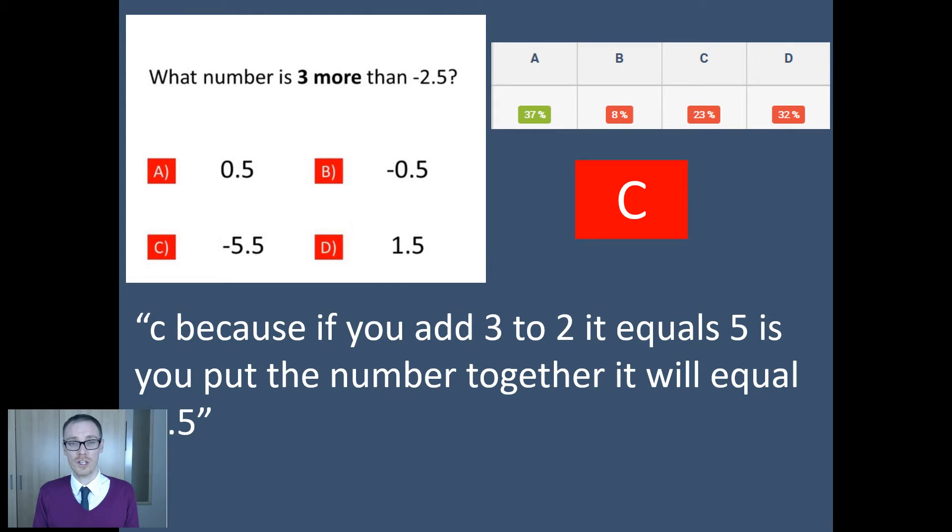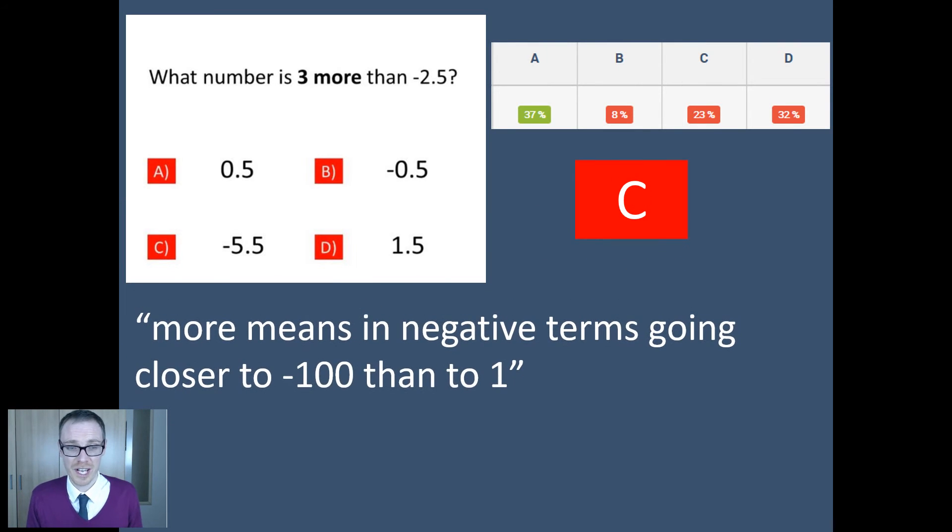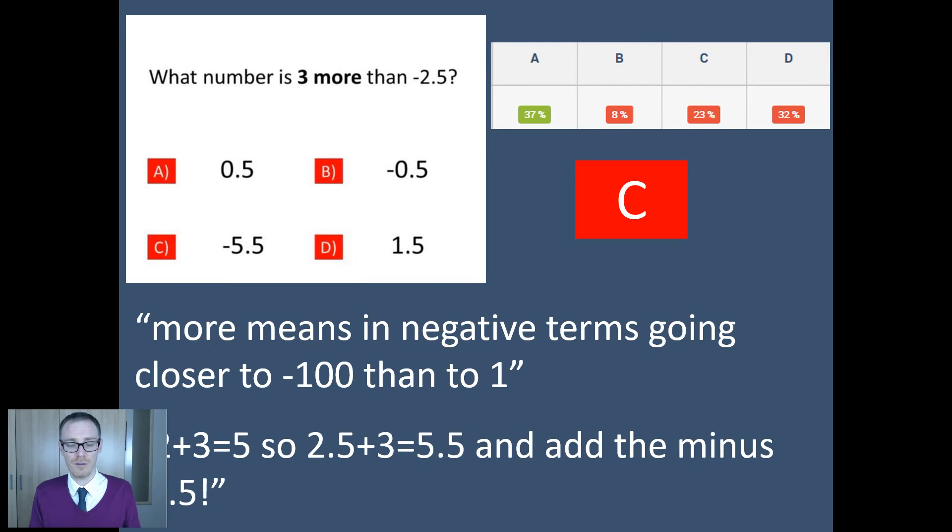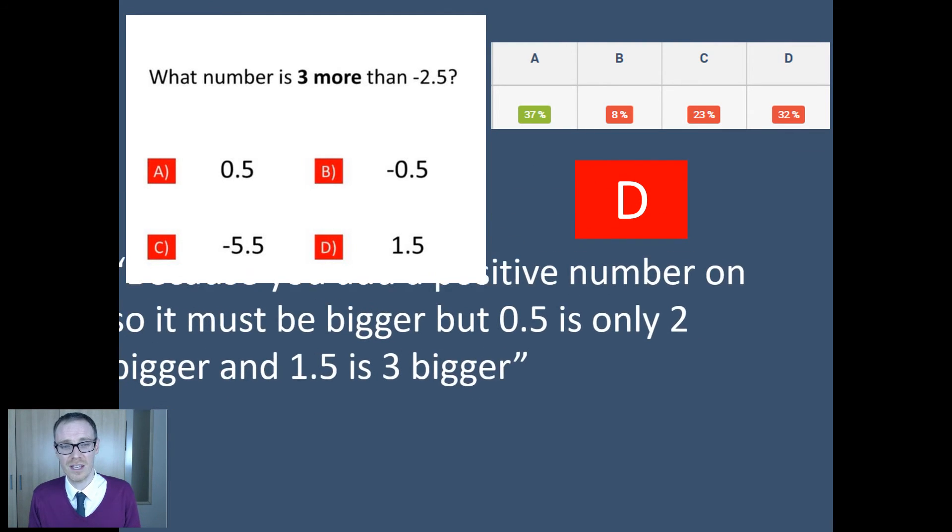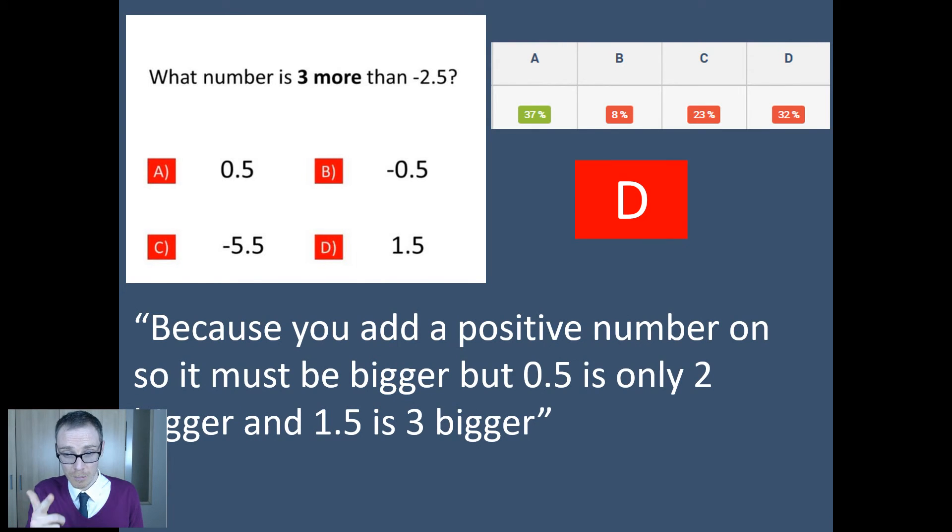So why are students going for C? Why do they see minus 5.5? If you have three to two it equals five, and you put the number together, it has been minus 5.5. So three more, they're just treating it as if positive answers. They're treating it as if it was three more than 2.5, then just chucking the minus sign on there. As a student explains, more means in negative terms going closer to minus 100 than to one. Well it does, but have they got the understanding of three more means more positive? A very specific misconception: two plus three is five, so 2.5 plus three is 5.5, put the minus sign on. Same misconception. What about D? Why is this the most popular? 1.5 because you had a positive number on, so it must be bigger. Correct, but 0.5 is only two bigger and 1.5 is three bigger. What's going on here? Well I reckon students are missing out the zero when they're counting here, a completely different misconception than is apparent in answer C, which is going to require different intervention.